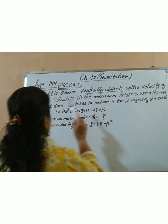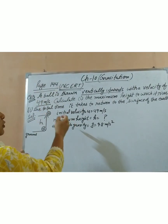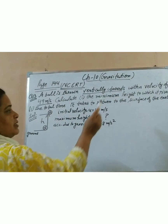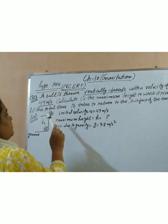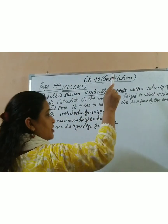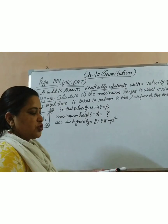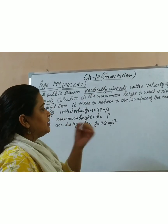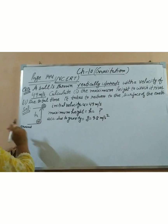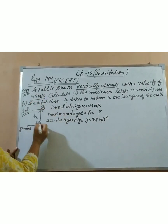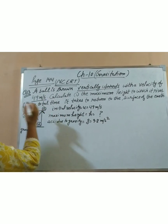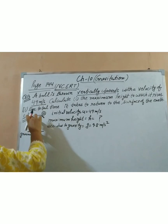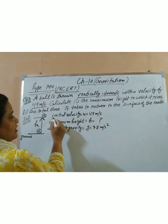You throw the ball upward with some speed. The question asks us to calculate: first, the maximum height to which it rises, and second, the total time it takes to return to the surface. So the ball goes up and then comes back to ground — we have to calculate the maximum height and total time. From the ground we are throwing the ball in the upward direction.